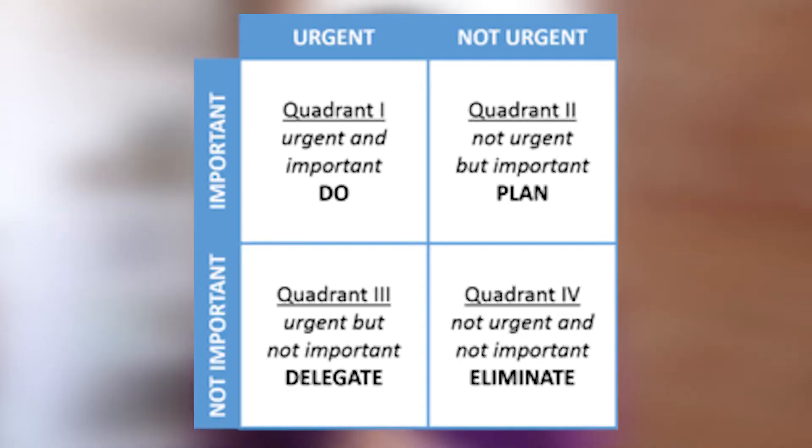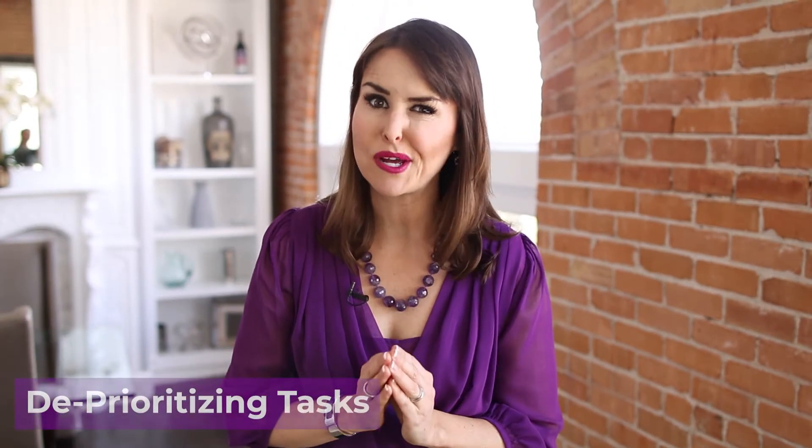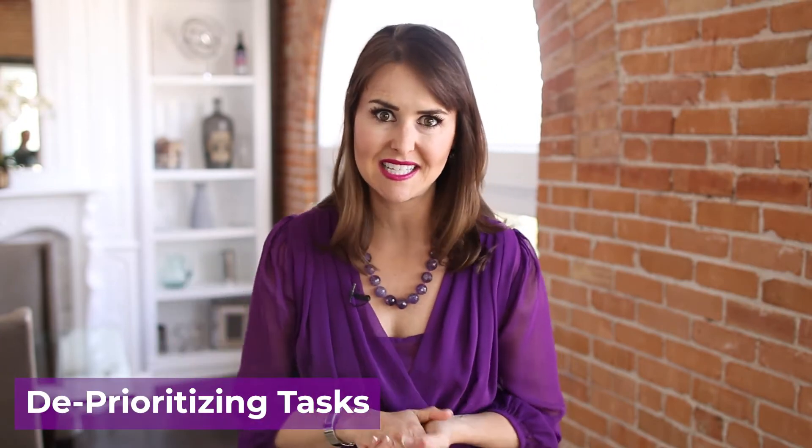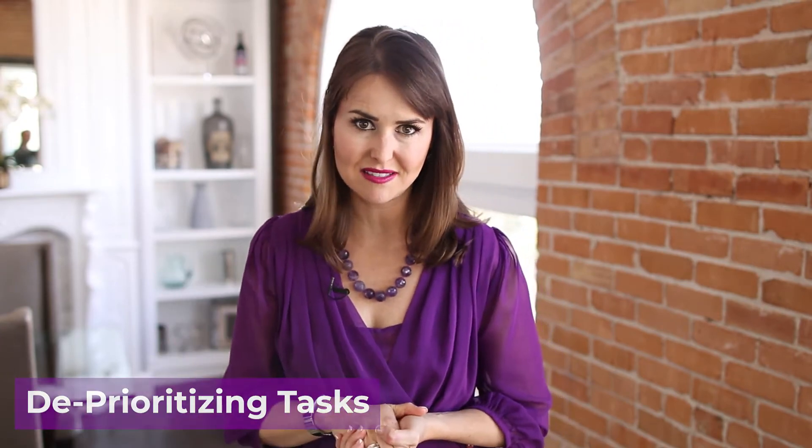In the second quadrant, what we see are tasks that are not important but they are urgent. If something is not important but urgent, it's very likely that you should deprioritize it by delegating it to someone else.